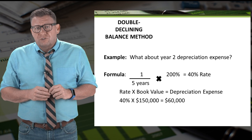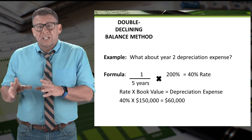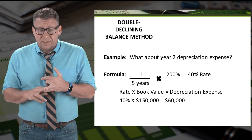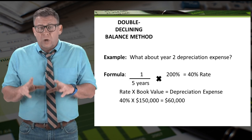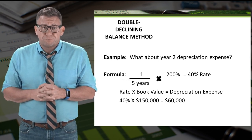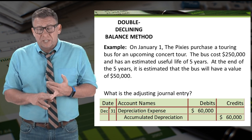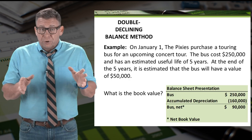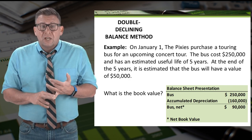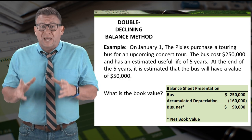Let's look at the amount of depreciation expense for year two. The formula is the same, so the depreciation rate is still 40%, but the book value has changed from $250,000 to $150,000. So 40% times $150,000 equals $60,000 of annual depreciation expense. We record the adjusting journal entry by debiting depreciation expense and crediting accumulated depreciation for $60,000. The book value is cost minus accumulated depreciation: $250,000 minus $160,000 gives us a net book value of $90,000.